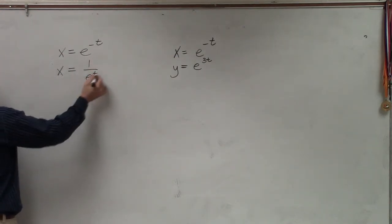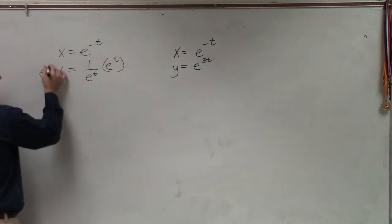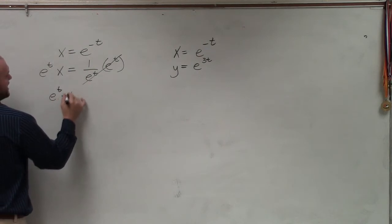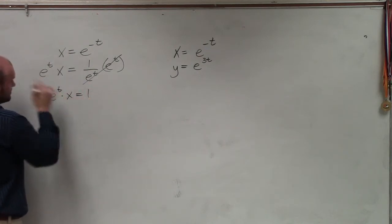I need to solve for x, so I'll multiply e to the t on both sides to get it off the denominator. Then I have e to the t times x equals 1. Divide by x.